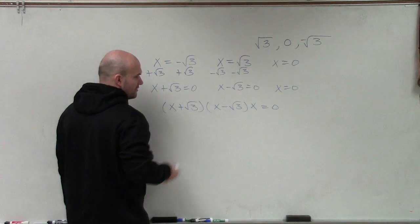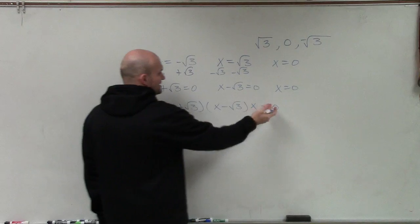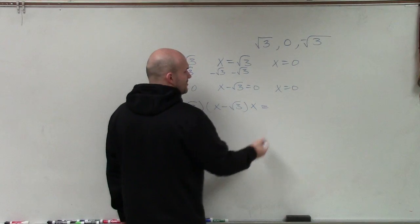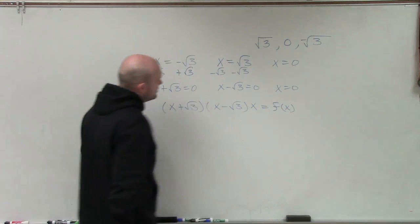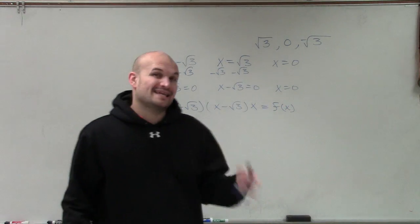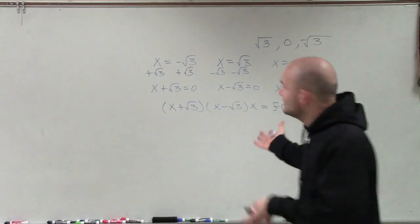But we're not trying to multiply these to get to our 0 product property. We're trying to multiply these so that we can determine our polynomial. So now what I need to do is multiply each one of these factors to determine this polynomial.